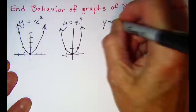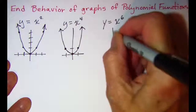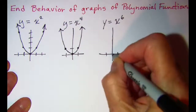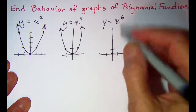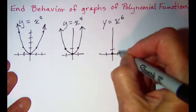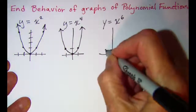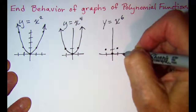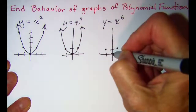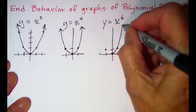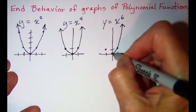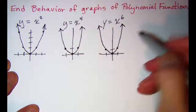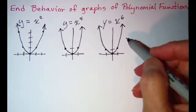If I were to look at y equals x to the sixth, right around the origin: 0 to the sixth power is 0, 1 to the sixth power is 1, negative 1 to the sixth power is 1. When x is 2 it's a pretty large number but it's still a positive y value, and when x is negative 2 it's still going to be a positive y value.